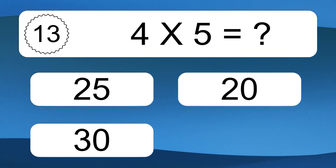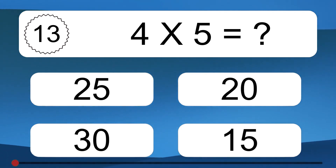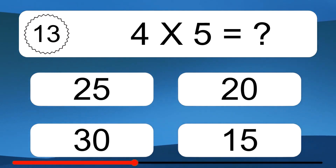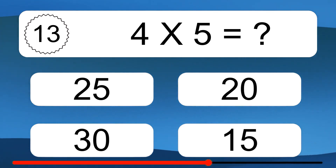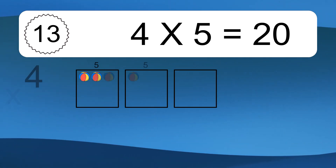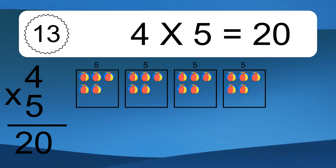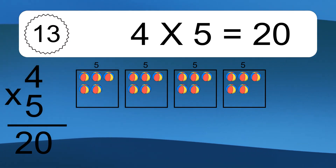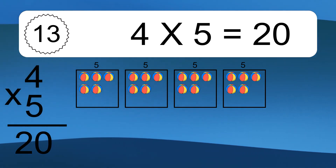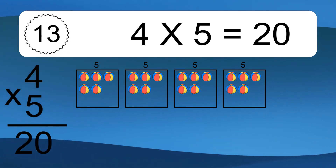4 times 5 equals what? We have 4 boxes, and each box has 5 colorful balls inside. If you count all the balls in all the boxes together, you will have 4 times 5 balls. This equals 20 balls.